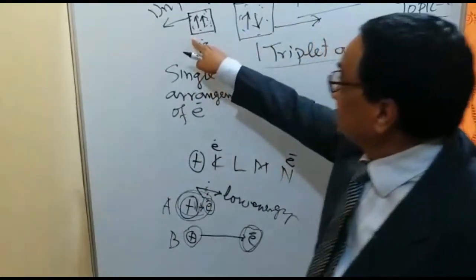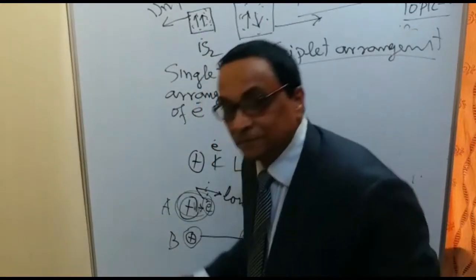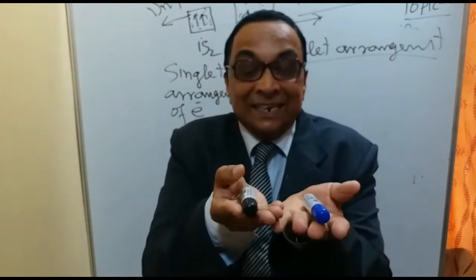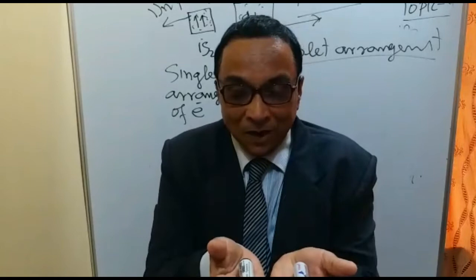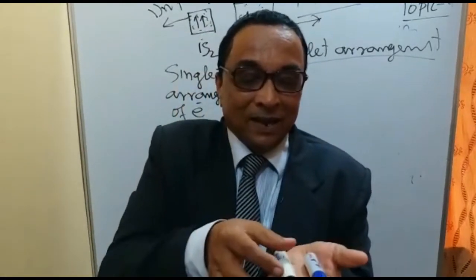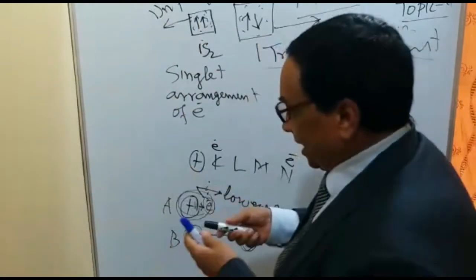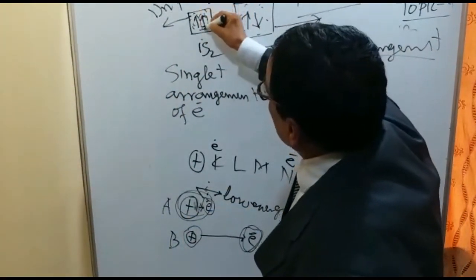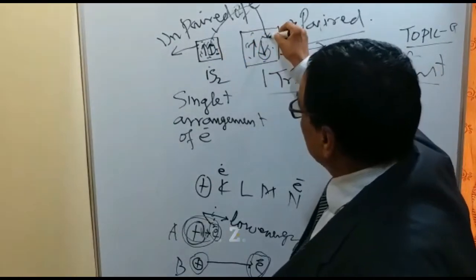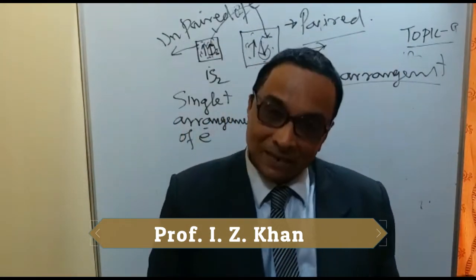Why does the singlet state have more energy and the triplet state less? It is like taking two magnets with both heads pointing the same way: to flip one into the opposite direction, you need to apply energy. Similarly, to flip one electron into the opposite spin direction, energy is used from inside the system. That energy expenditure means the triplet state has used energy to achieve that flip, resulting in a lower energy state, which is why the triplet arrangement is more stable than the singlet.